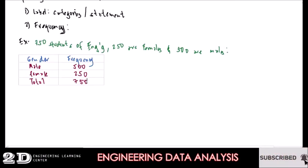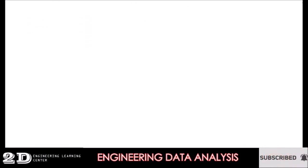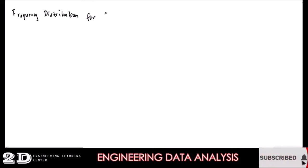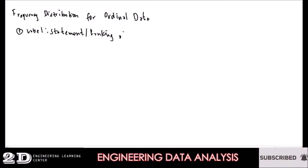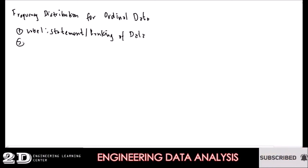Now we will do another frequency distribution table, this time for ordinal data. For ordinal data, the first column label must be the statement or how the data are ranked — because ordinal data is all about rank. The second column, same as nominal data, will be for the frequency.